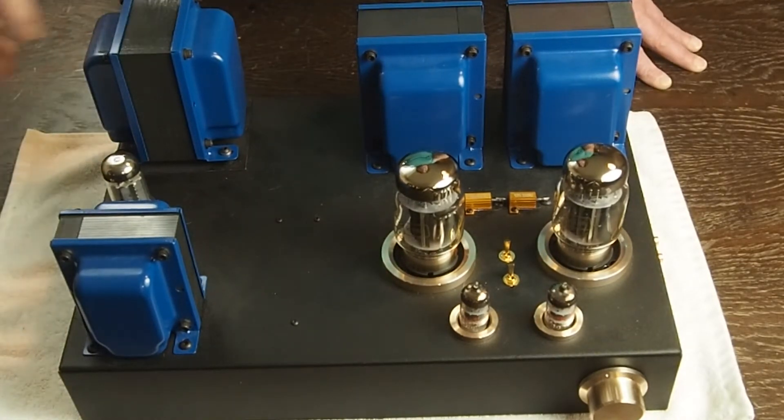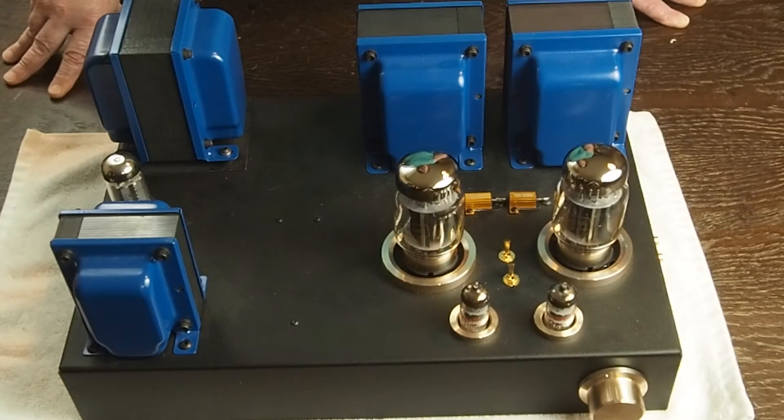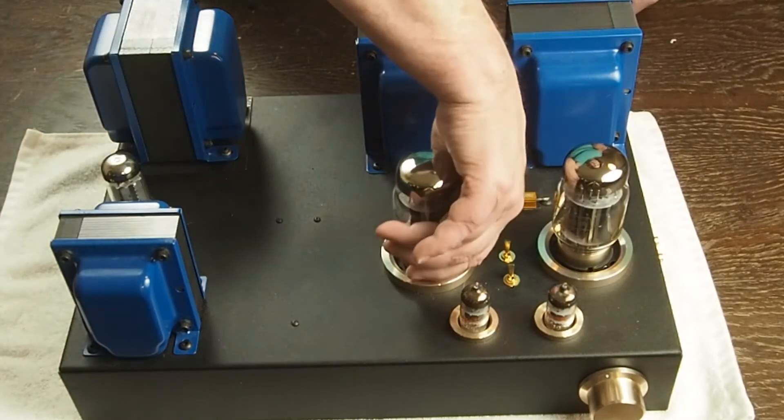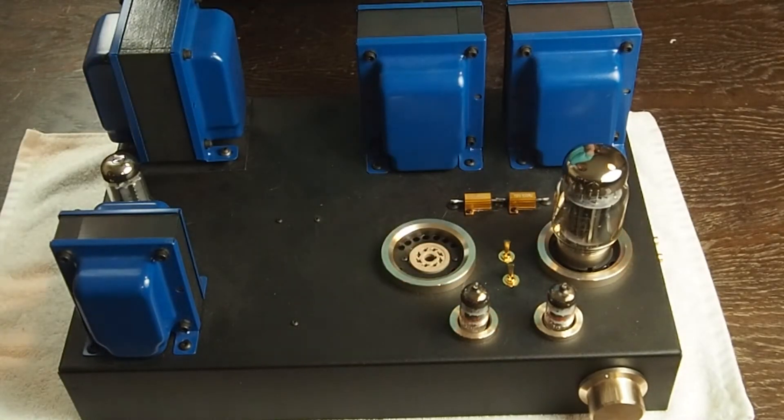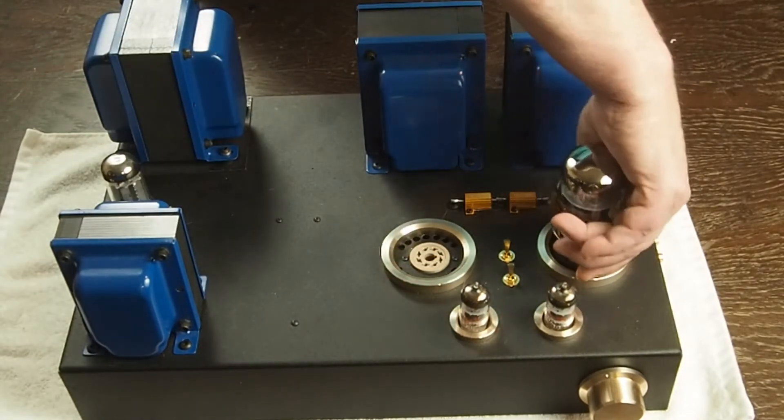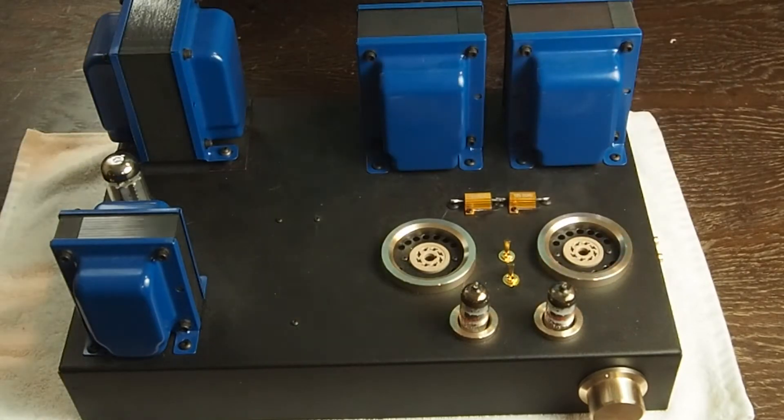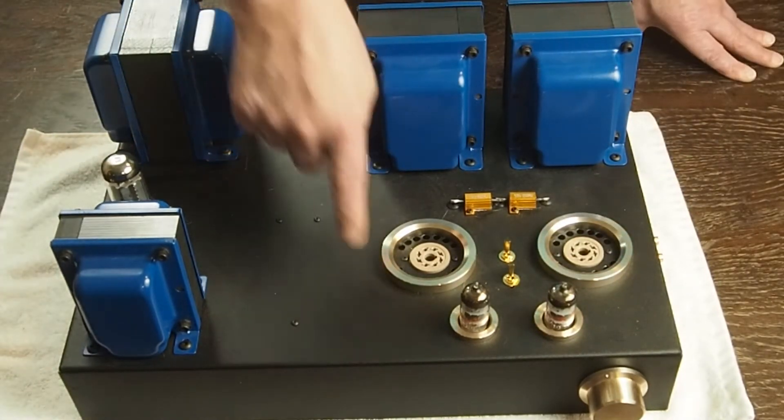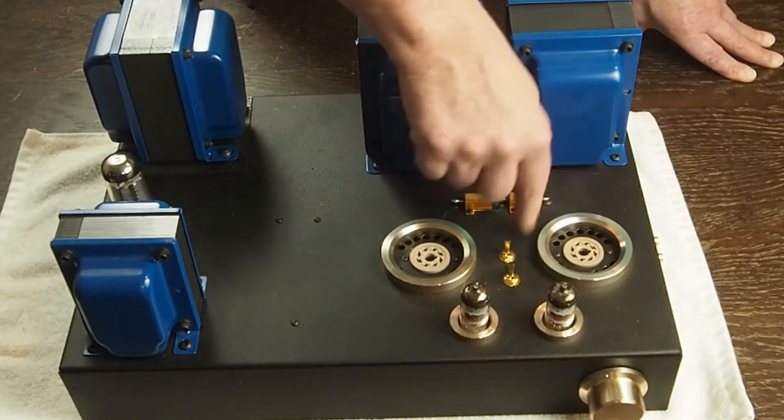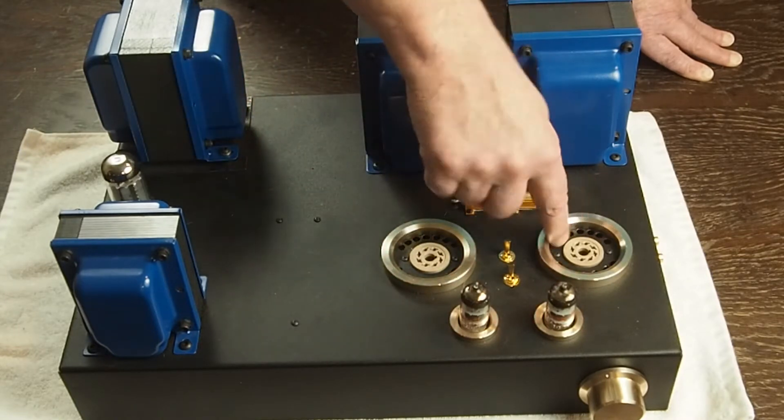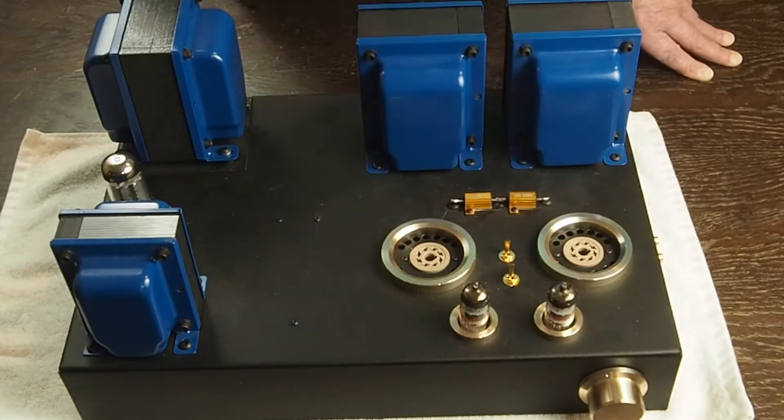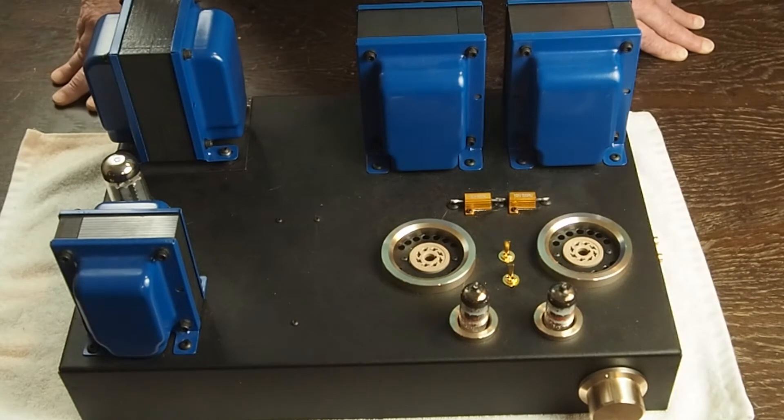I'm going to pull out the output tubes and set them over here so we can get a better look at the amp. As you can see, little decorative rings that I got off eBay. There's holes drilled here to help provide cooling for the KT88 tubes.